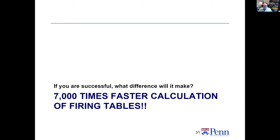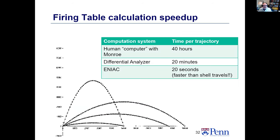What difference would it make? This ought to speed up the firing tables by about 7,000 times. Instead of a human computer with a Monroe taking 40 hours, or the differential analyzer taking 20 minutes to generate one firing table line, the ENIAC could do it in 20 seconds. Flight time for a reasonable artillery shell is about 25 to 30 seconds — so it could actually compute faster than the shell could fly. This was amazing 75 years ago.